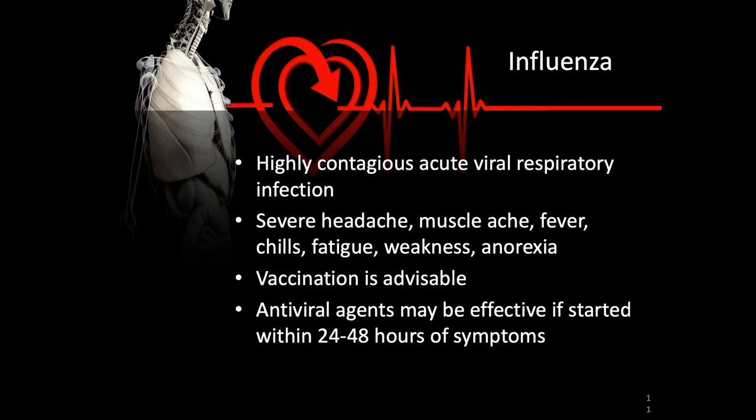Influenza type B is usually only found in humans and can cause illness, but is generally associated with less severe infections than type A viruses. Type C viruses cause mild illnesses in humans but are mostly confined to different types of animals. The avian flu, H5N1, is usually not transmitted to humans — it is highly contagious to birds — and is not normally included in the seasonal vaccine.